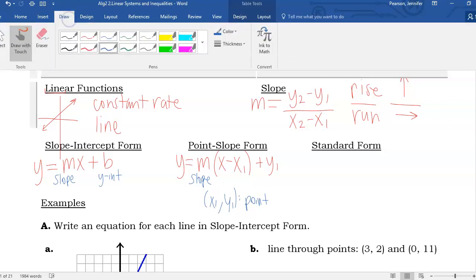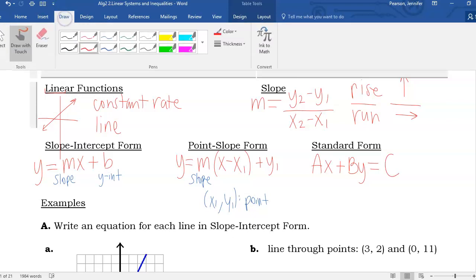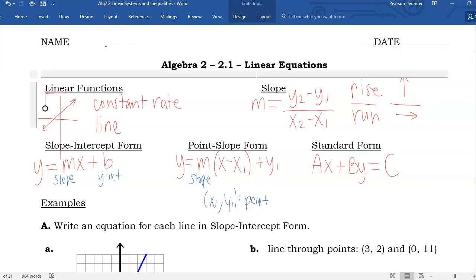The last form we're going to talk about is standard form, usually ax plus by equals c. This one is looking at both the x-intercept and the y-intercept. The x-intercept would be c divided by a, and the y-intercept would be c divided by b.